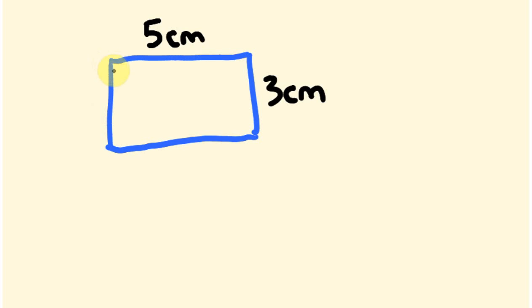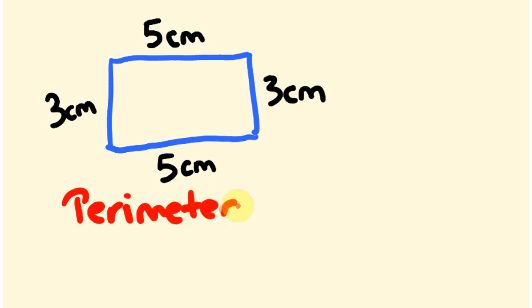So the first step is you put on the unknown side. We have this side here written down and we have this side here written down but there's two sides we don't know. But it's fairly simple because a rectangle we're going to see here this length is the same as this length here so this is 5cm. And this length here is the same length as this length here so this is 3cm.